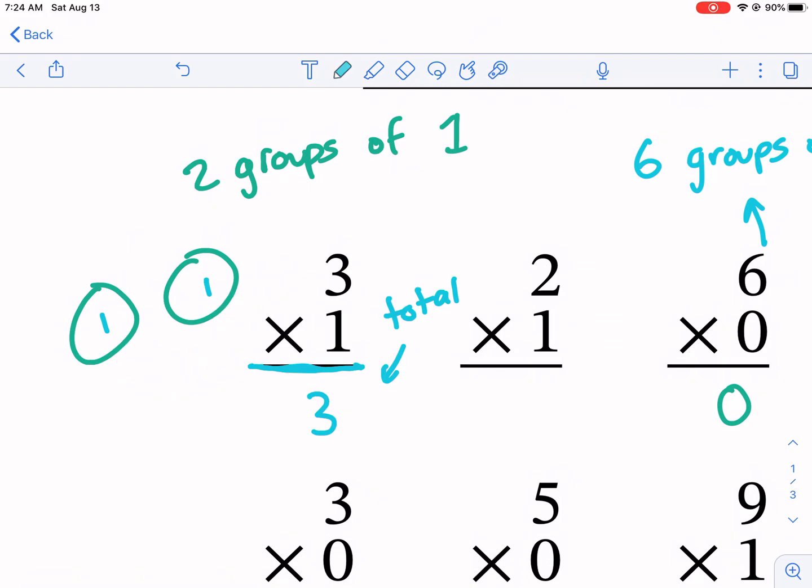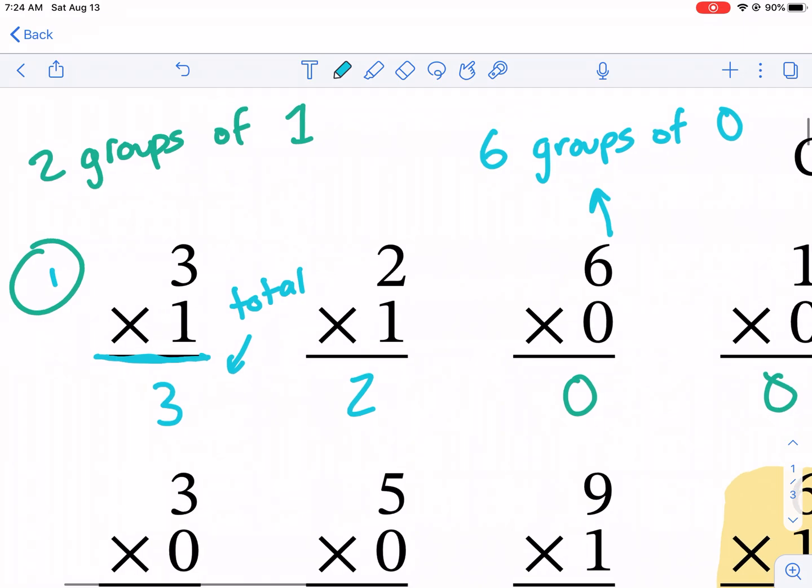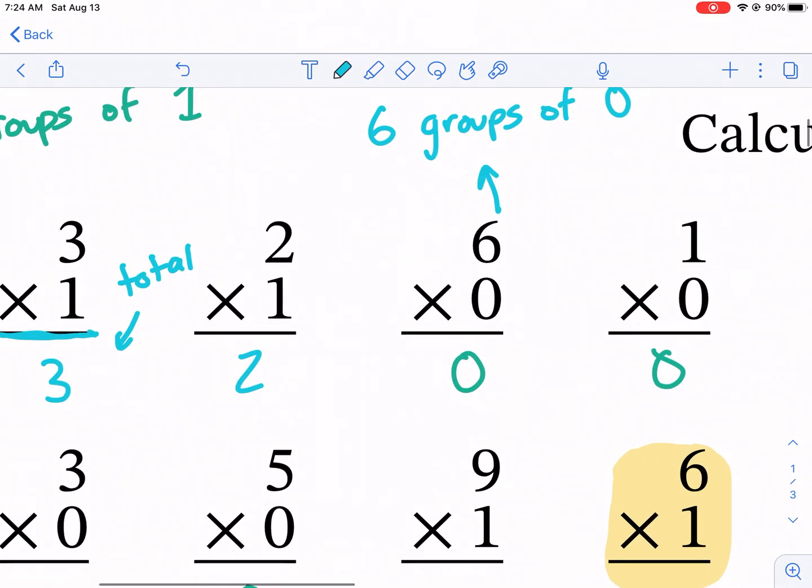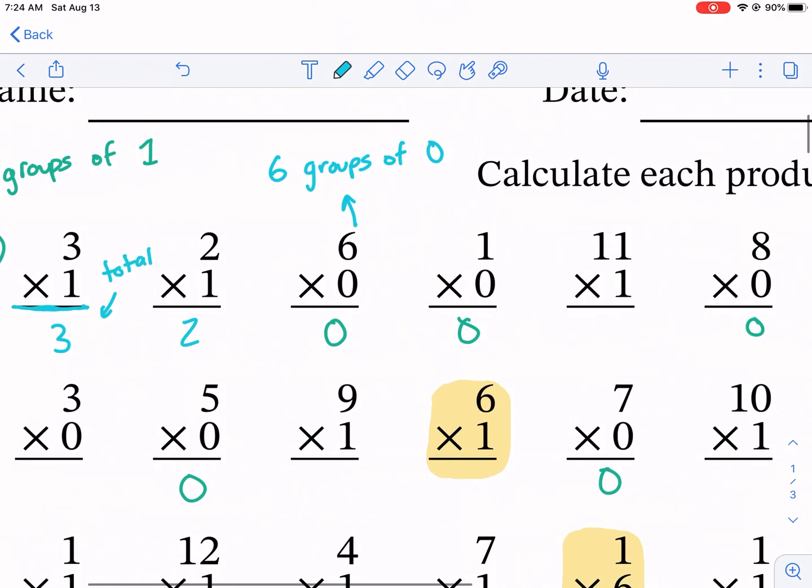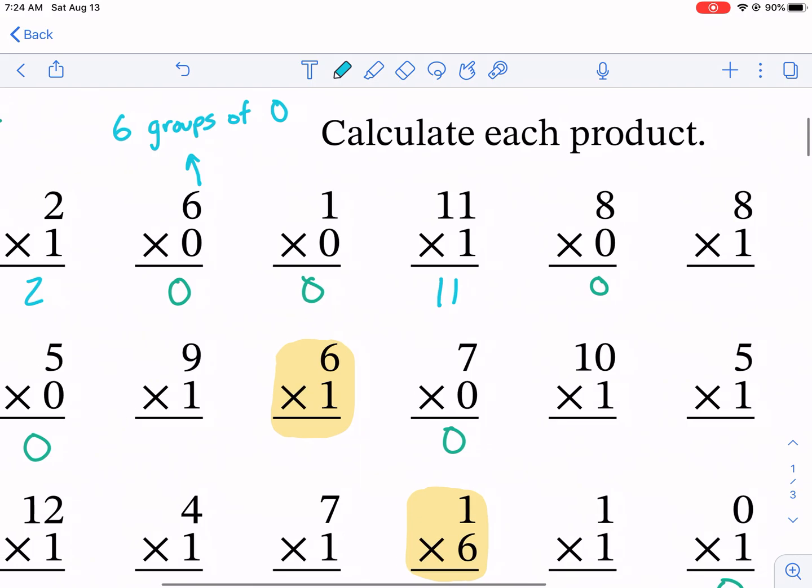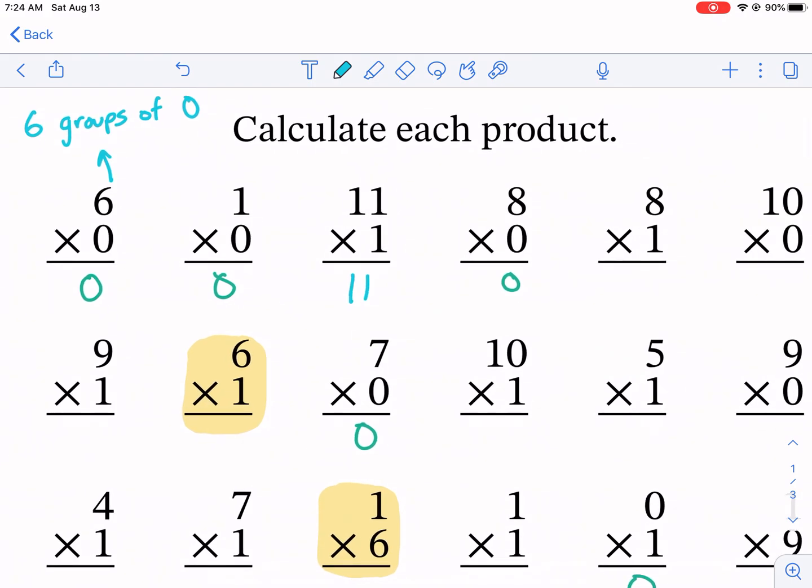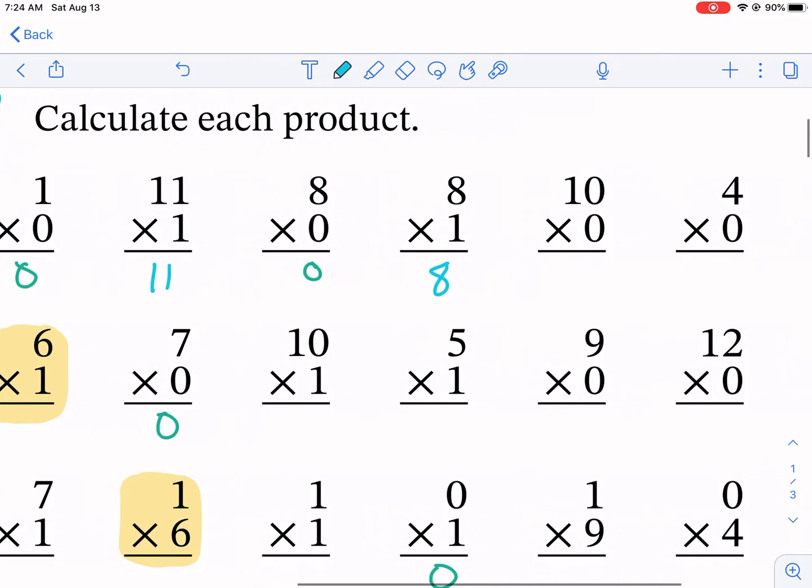What's the pattern? Anytime you multiply by one, it's gonna be whatever that number is. It stays the same. So eleven times one, you guessed it, is gonna stay eleven. This is what's known as the identity property of multiplication. That means the number stays the same. Eight times one is eight. Five times one is five.